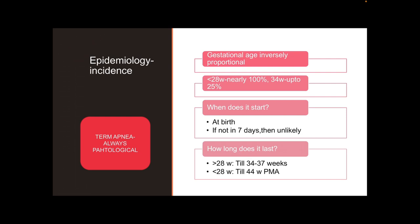Incidence is inversely proportional to gestational age — the more premature the baby, the more immature the neurological systems, and the greater the chance of apnea. Less than 28 weeks, nearly 100 percent have apneas; by 34 weeks it decreases to about 25 percent. Apnea can start even at birth. If the baby does not have an apnea in the first seven days of life, it is unlikely to have apneas in the future unless there is a trigger such as sepsis or NEC.